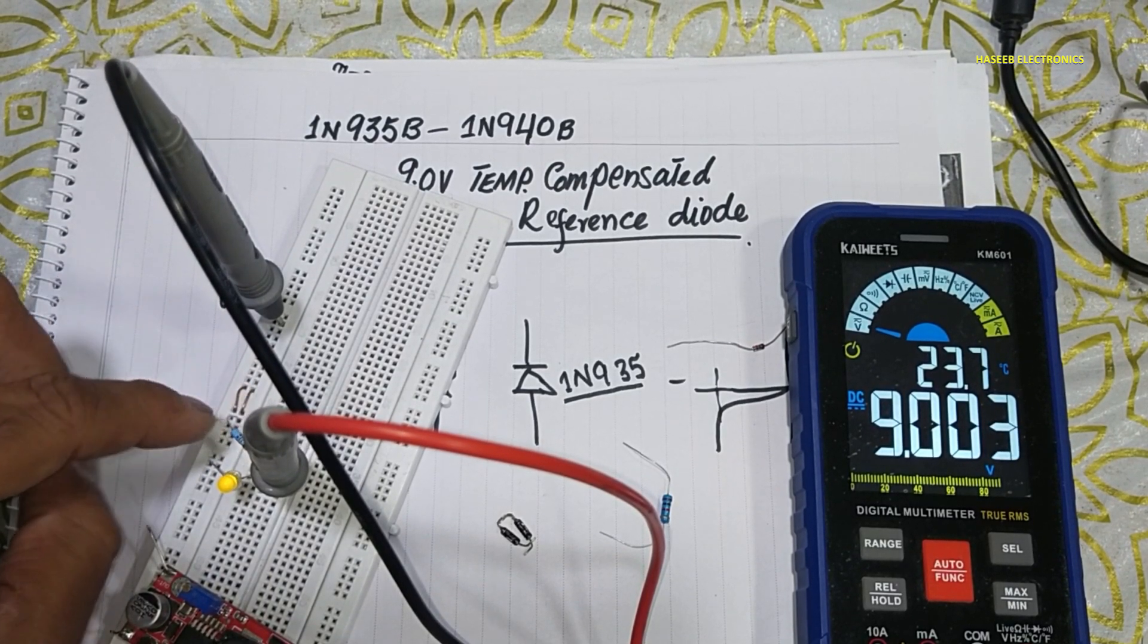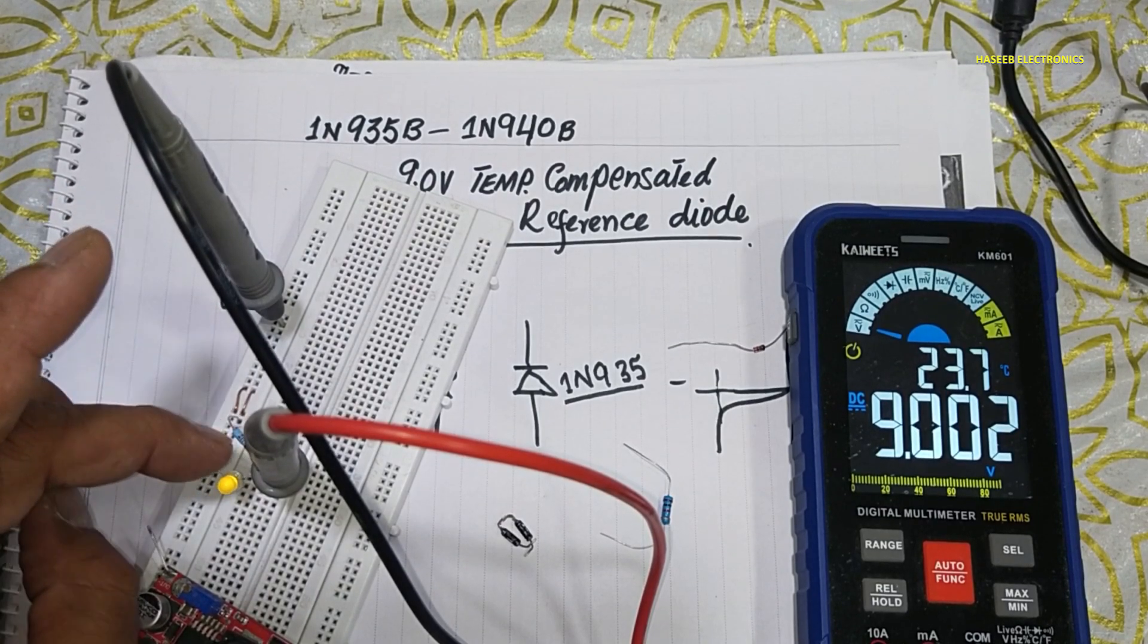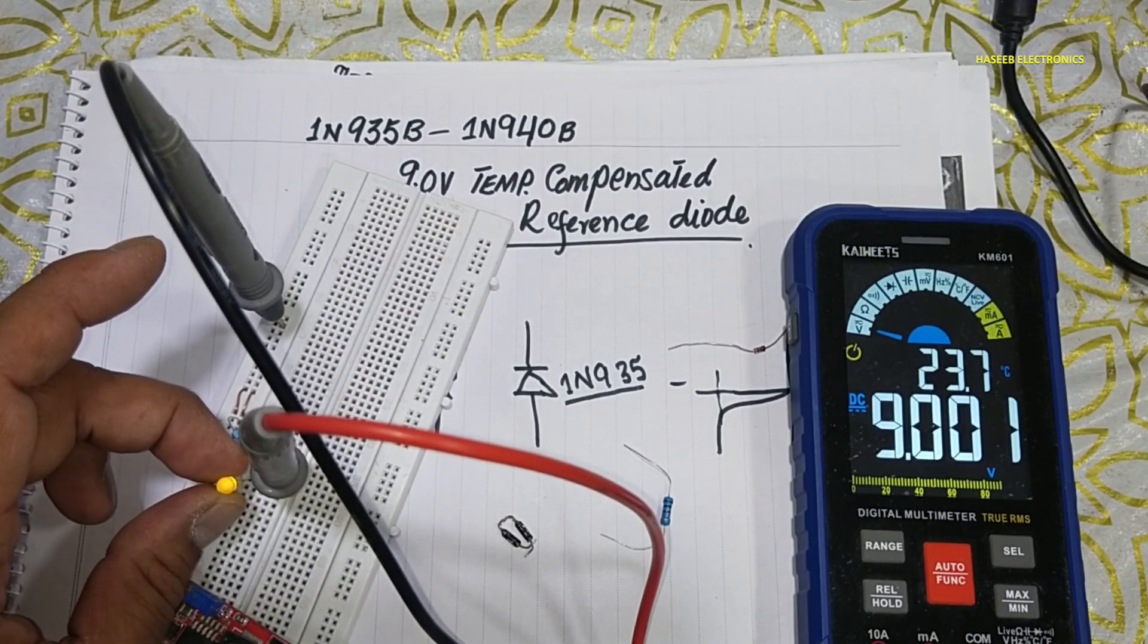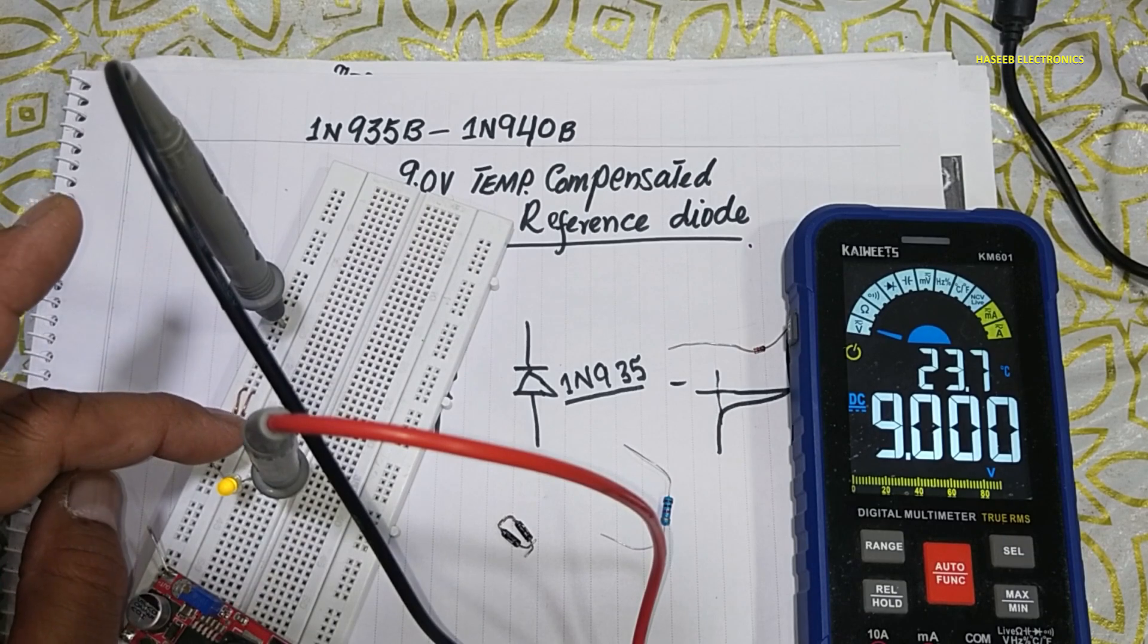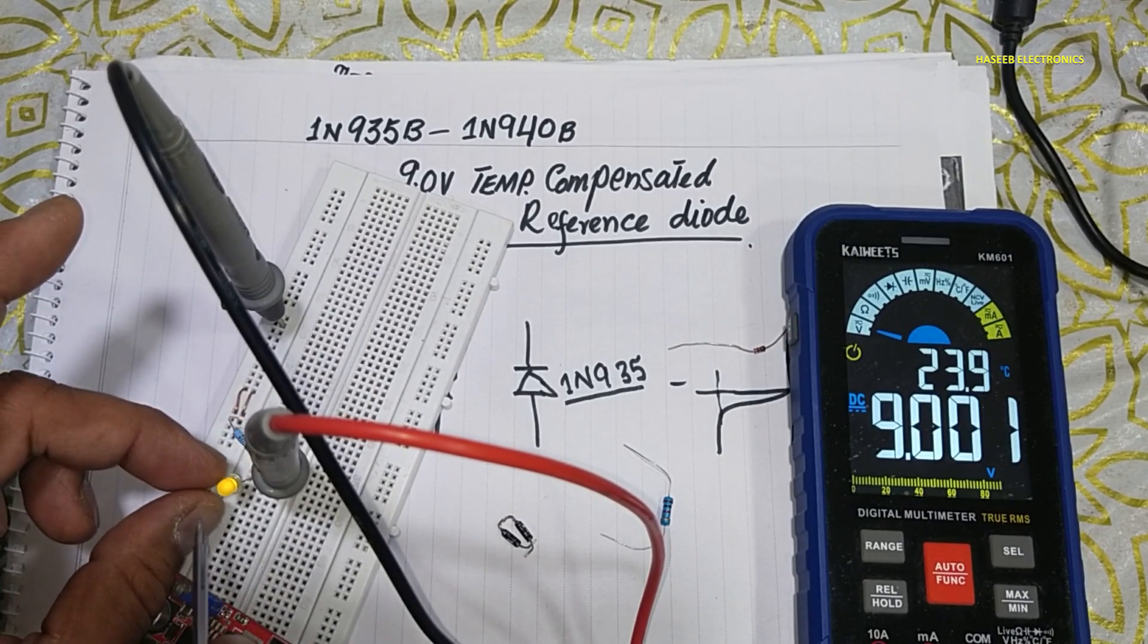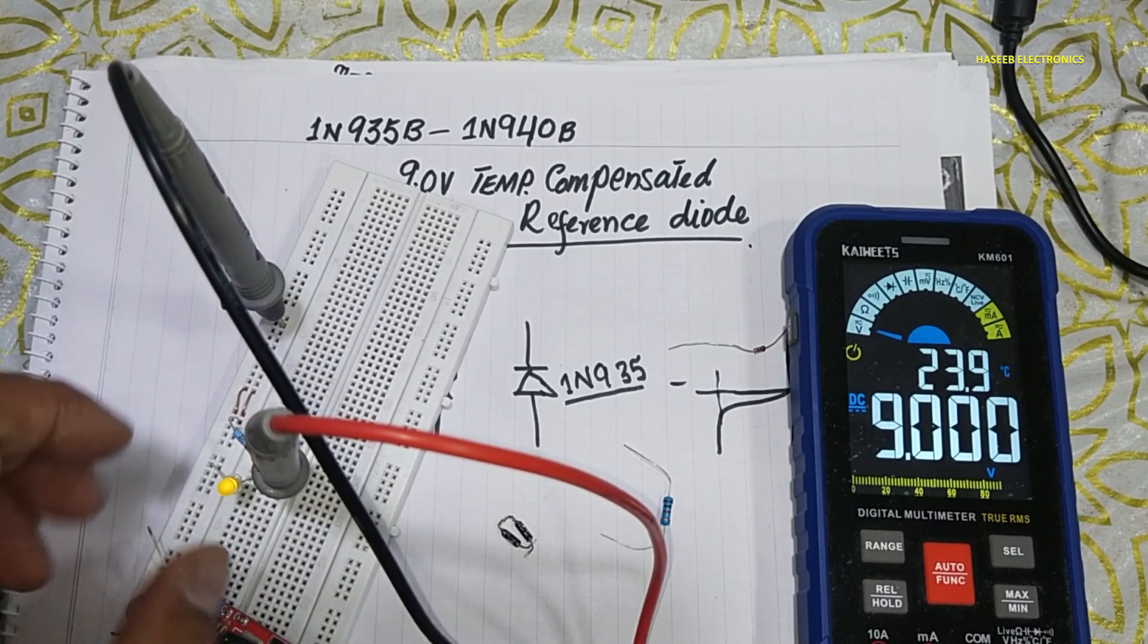If the zener reference is bad, at that time it will drop all the supply voltage across it and it will never allow any load current. This time it is dropping 9 volts and we are receiving output, but in case we have a bad zener reference, in that situation it will not allow cathode current.